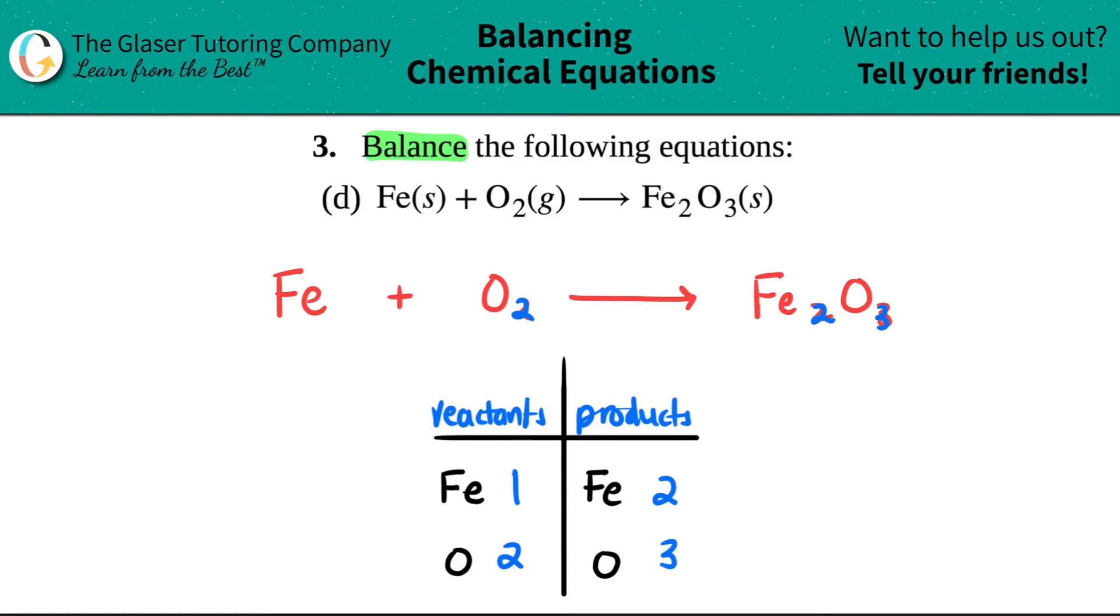Okay. So let's see. Both of these need to be balanced. The number is not the same on both the products and the reactant side. That's what we have to do. We have to get the same number on both sides.